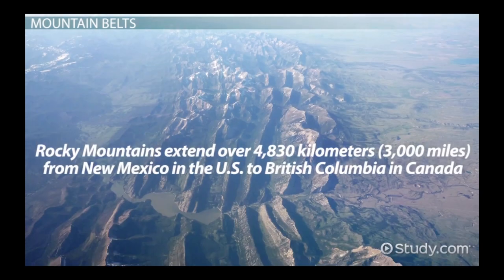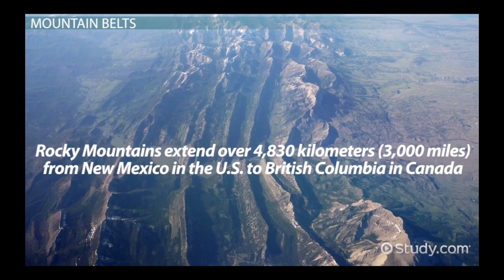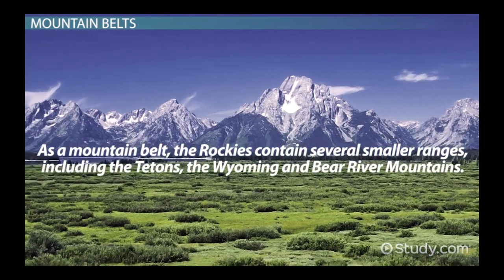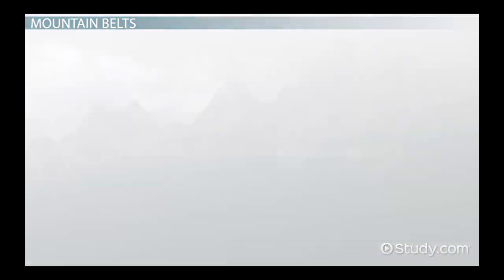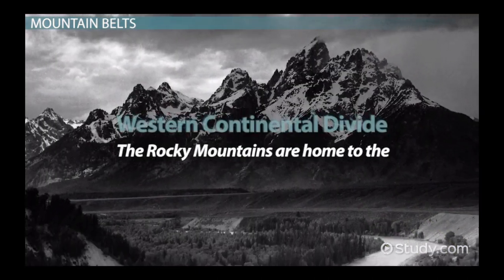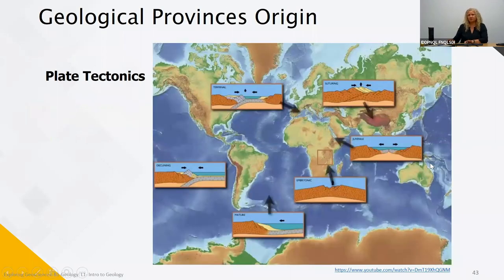The Rocky Mountains extend over 4,830 kilometers from New Mexico to British Columbia in Canada. As a mountain belt, the Rockies contain several smaller ranges including the Tetons, the Wyoming, and the Bear River Mountains. The Rocky Mountains are home to the Western Continental Divide. All the concepts are now covered for the next other half of the lesson, which will move to the geology of Quebec.